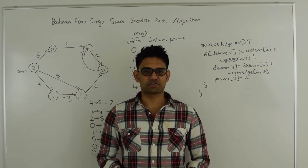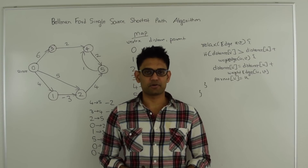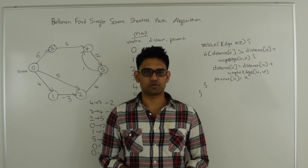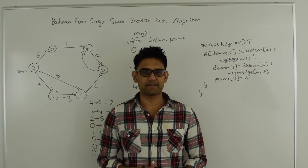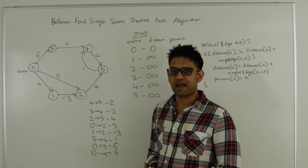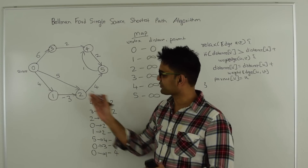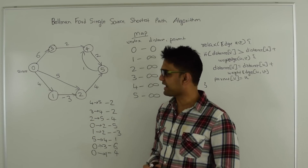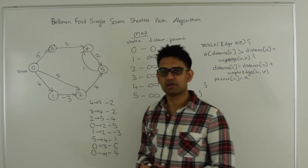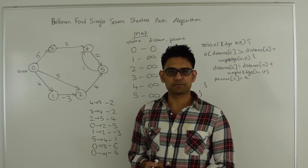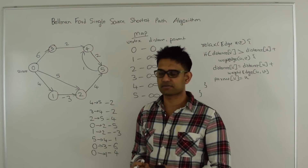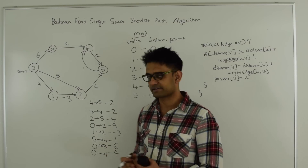Hello friends, my name is Tushar and today I am going to talk about the Bellman-Ford single source shortest path algorithm. We are given a directed graph with weights on the edges and a source vertex, let's say zero. The idea is to find the minimum distance of every other vertex from this source vertex.